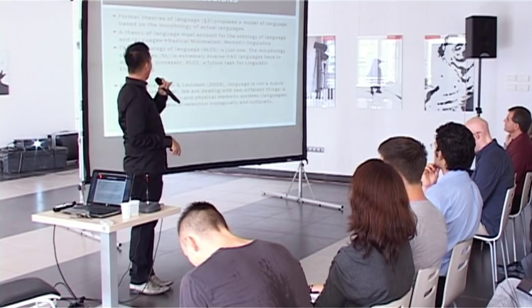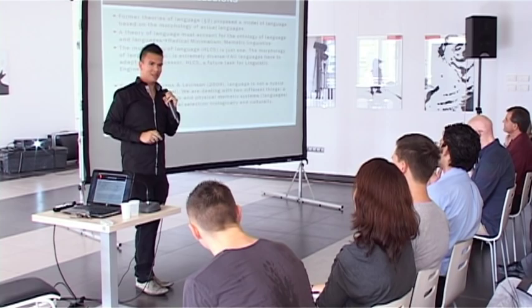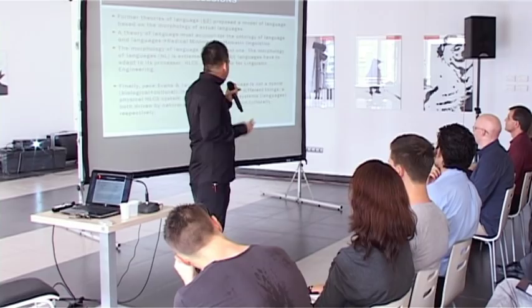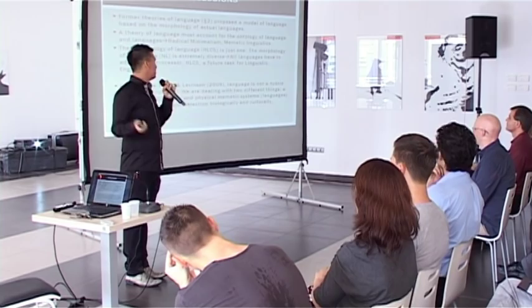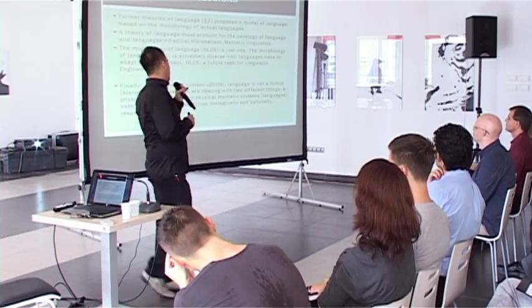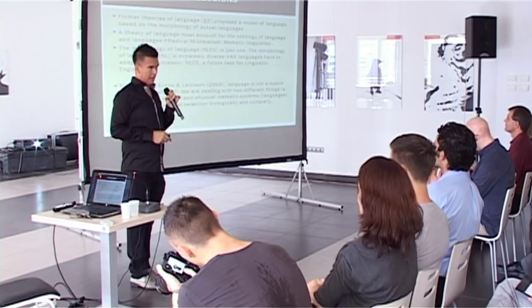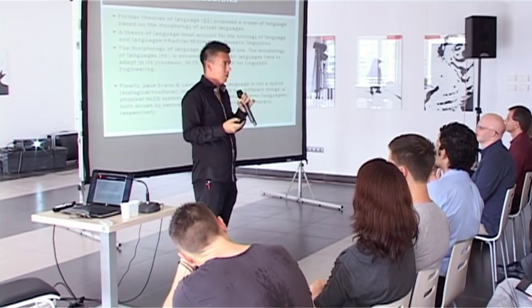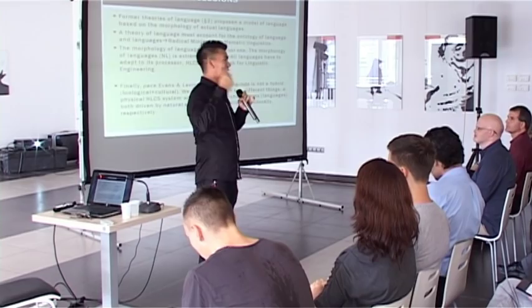Some conclusions: former theories of language proposed models based on the morphology of vector languages. A proper theory of language requires an ontology of language and languages, which is what radical minimalism and mimetic linguistics do. The morphology of the HLCS is just one, but the morphology of natural languages is extremely diverse, because all languages have to adapt to the HLCS processor and also to specific cultures and specific needs of their speakers. Language is not a bio-cultural hybrid — we are dealing with two different things: a physical language system called HLCS, and physical mimetic systems called natural languages, both driven by natural selection biologically and culturally respectively. This is actually very simple, but no linguist has said this before.